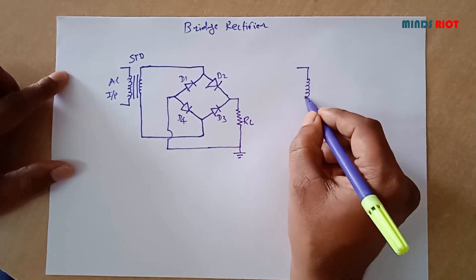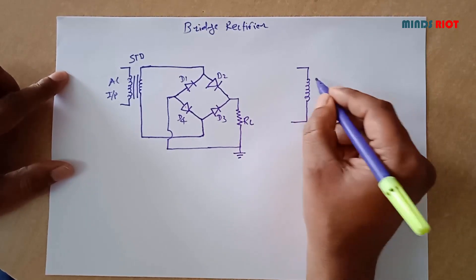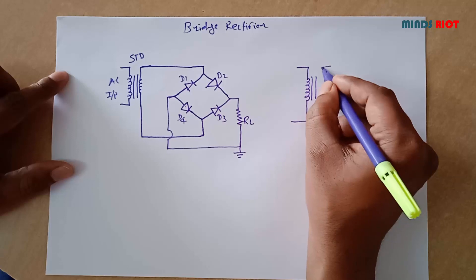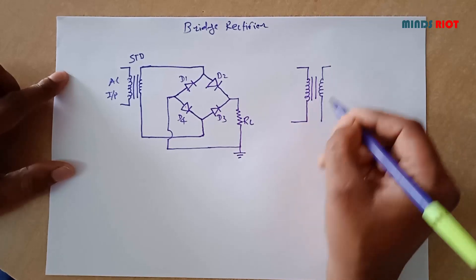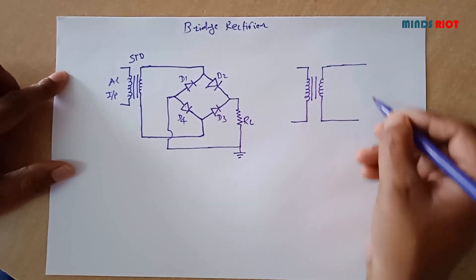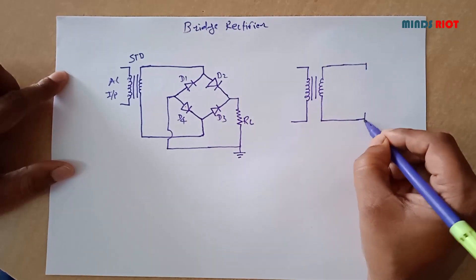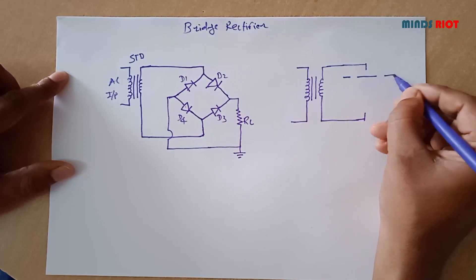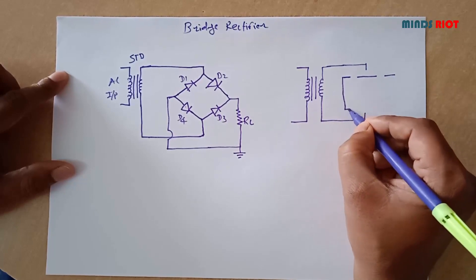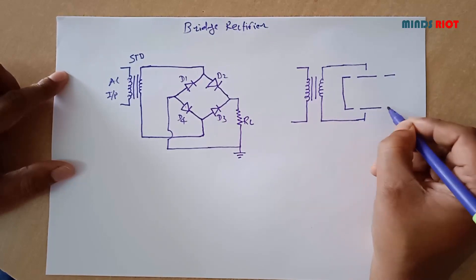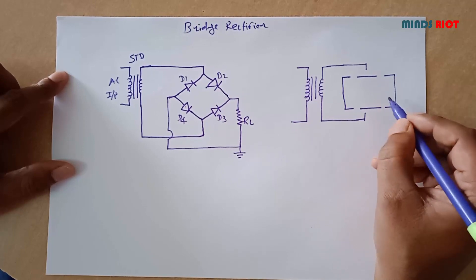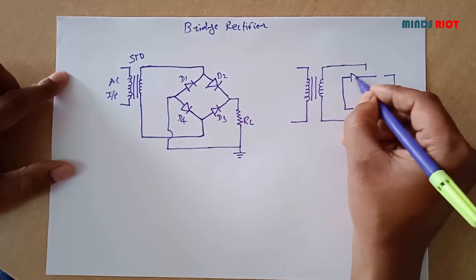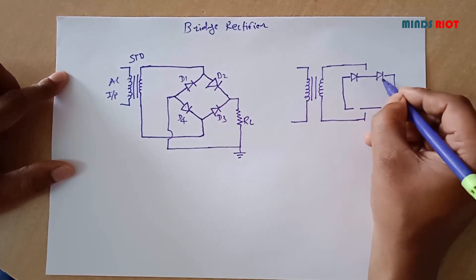Now the simplified one. In bridge rectifier, two diodes are connected in back-to-back fashion, like cathode of first diode goes to anode of second diode.